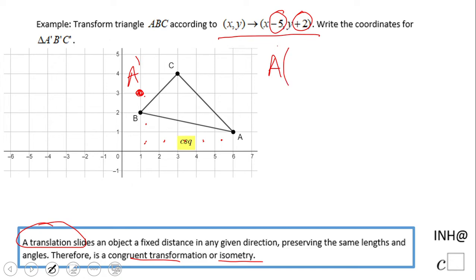Let's write up point A. A is at coordinates six and one. How do we get it algebraically? We can get it by six minus five and one plus two. So that means A prime is one and three, which is right here. You see?